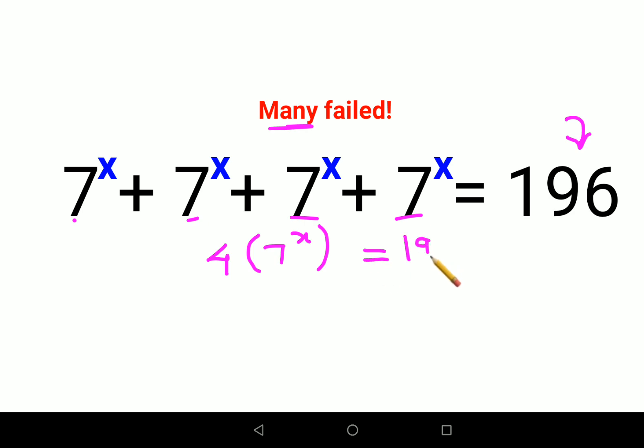Now in order to find the value of x, we first have to keep all the numbers on one side. So this then comes out to be 7^x = 49.